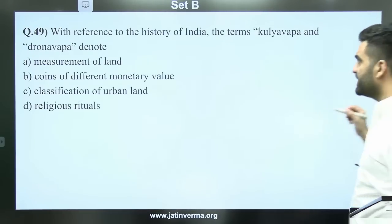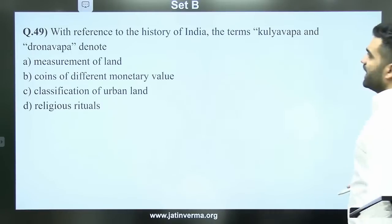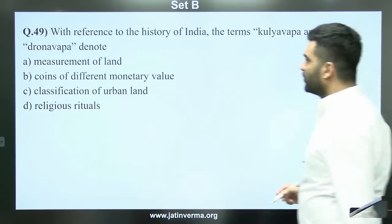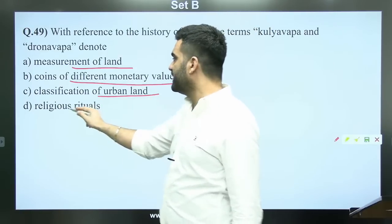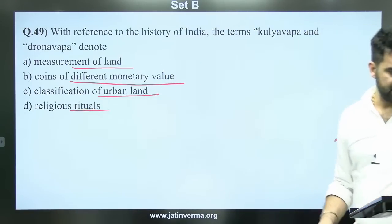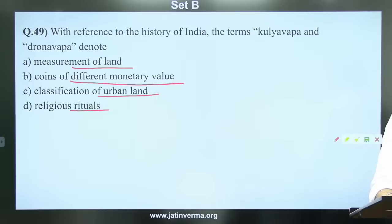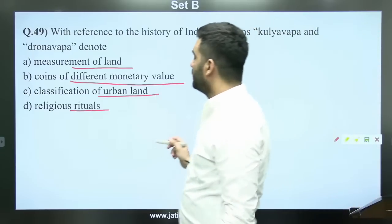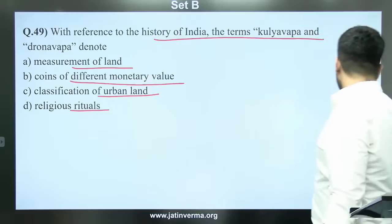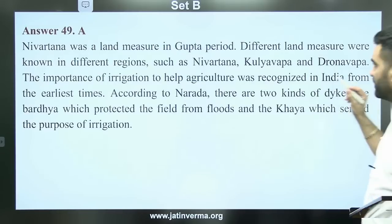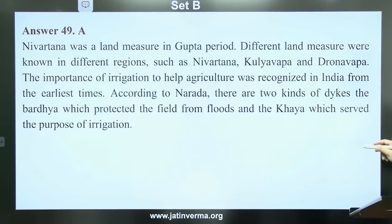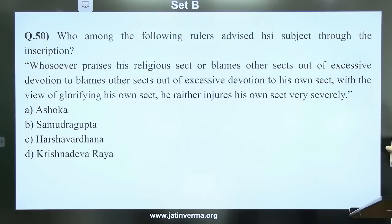Question 49: With reference to the history of India, the terms Kulia Vapa and Drona Vapa denote — measurement of land, coins of different monetary value, classification of urban land, or religious rituals. The answer to question 49 is A — measurement of land. Nivaratna was a land measurement unit in the Gupta period. Different land measures were known in different regions, such as Nivaratna, Kulia Vapa, and Drona Vapa.